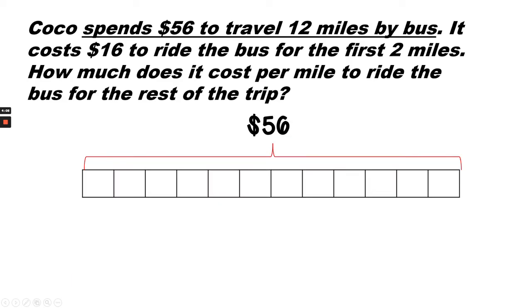Here's another example. Coco spends 56 dollars to travel 12 miles by bus. It costs 16 dollars to ride the bus for the first two miles. How much does it cost per mile to ride the bus for the rest of the trip? Coco spends a total of 56 dollars. That's the number at the top which signifies all the money.